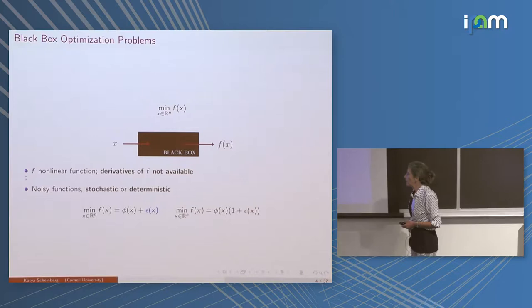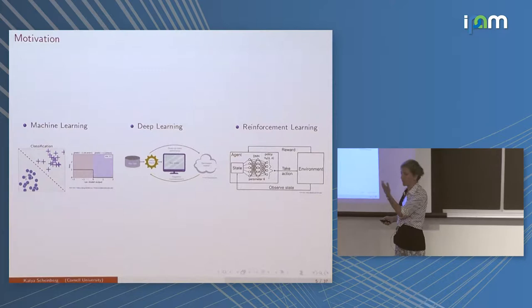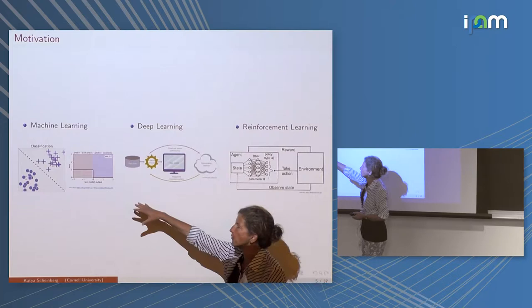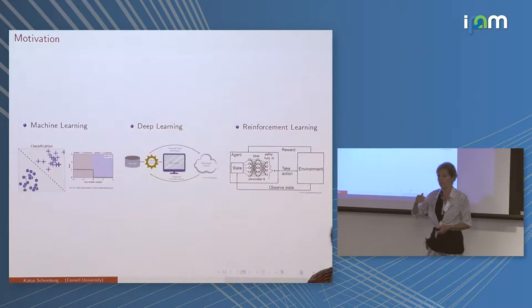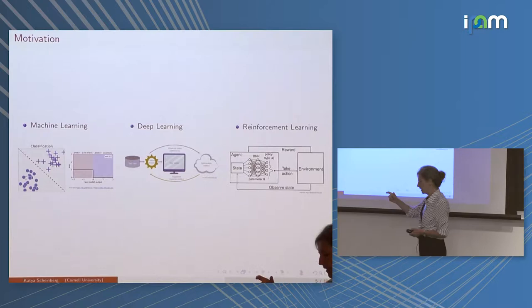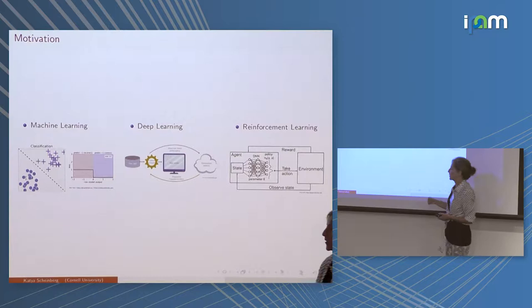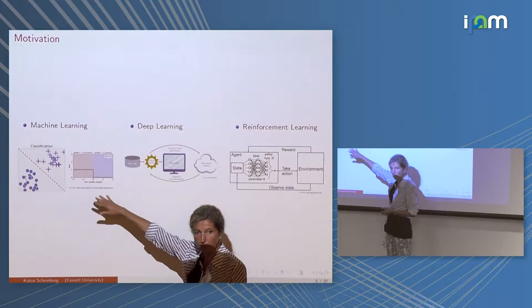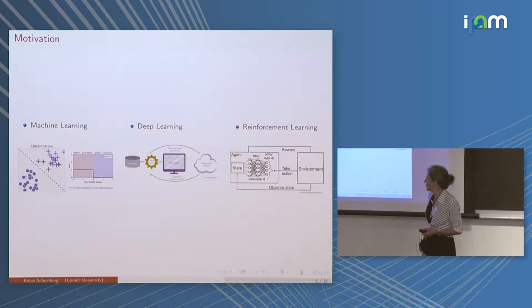So, the basic premise: I have only function values, no other information, and that function value may come with noise — stochastic noise or adversarial noise (hopefully bounded). As motivation in machine learning, you can treat the zero-one loss as a derivative-free function: the derivative is useless because it's zero everywhere and discontinuous. You can only treat this function as a black box; people usually replace it with some other loss.